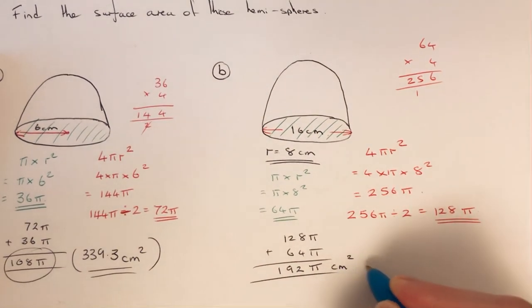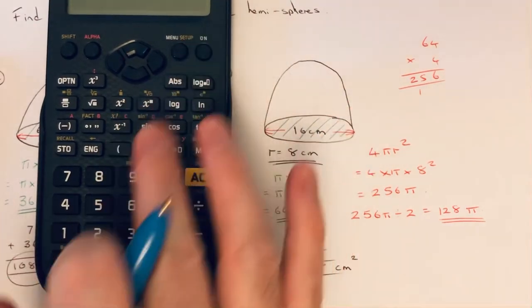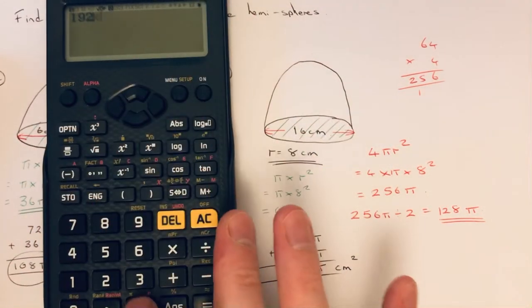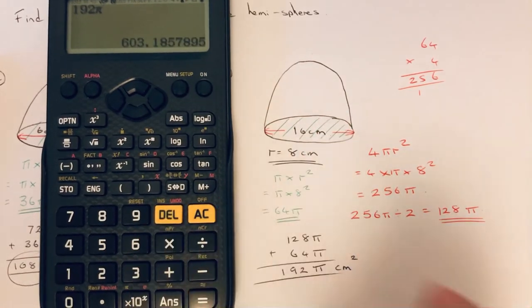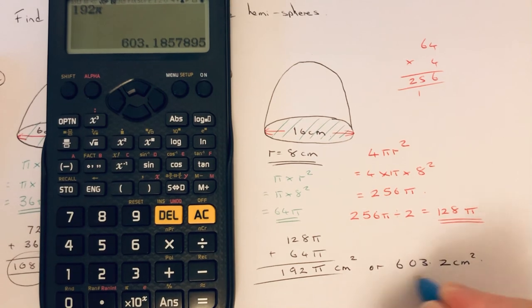So that is the exact answer. Again, if you want it as a decimal, just put it in on your calculator. 192π SD, so that is 603.2 centimeters squared.